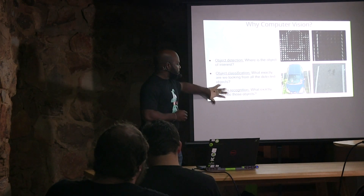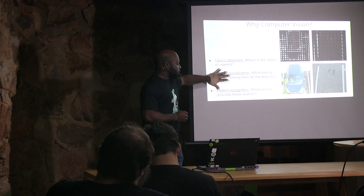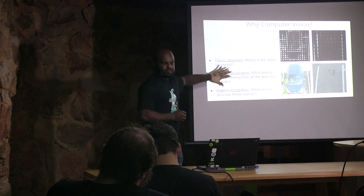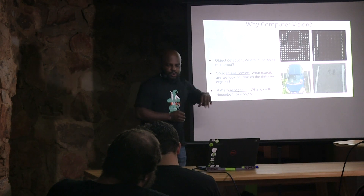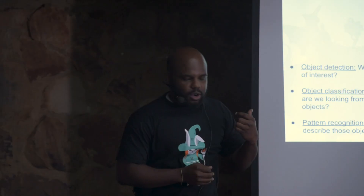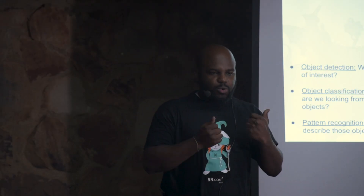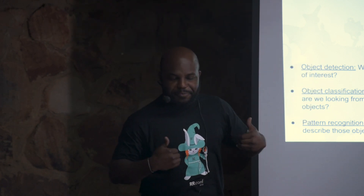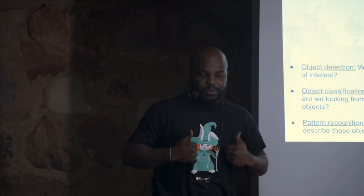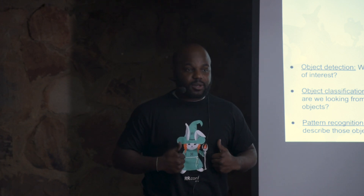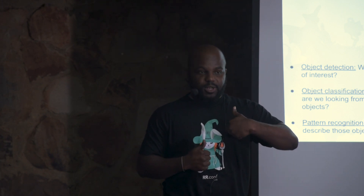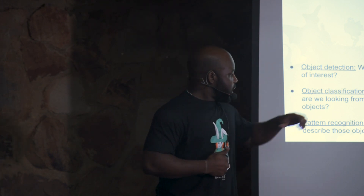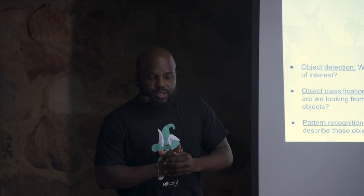In computer vision, we have two main elements. The first one is object detection — in a big field, we want to detect something. Like me here, you're detecting a human. A computer should now also detect a human. We have object detection.